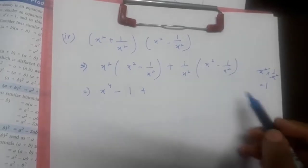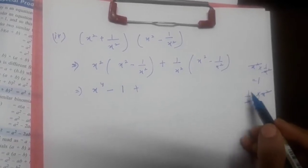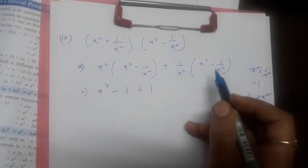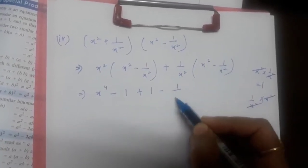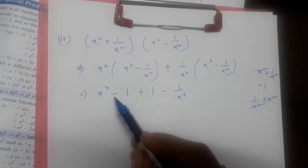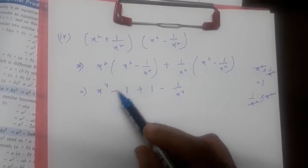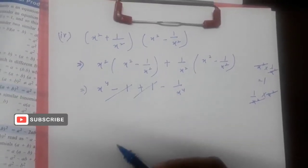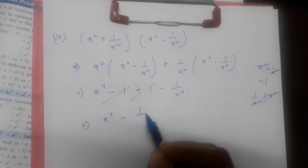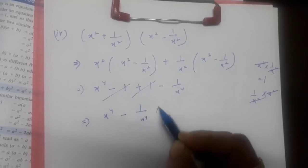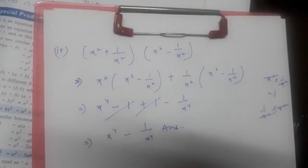Then 1/x² multiplied by x² will also get cancelled, giving +1. And 1/x² × (−1/x²) = −1/x⁴. Here +1 and −1 have opposite signs, so they cancel each other. Our answer is x⁴ − 1/x⁴. This is our answer for the fourth part of question number 3. Hope it is clear.